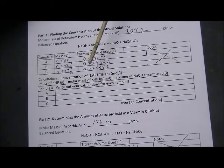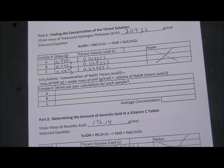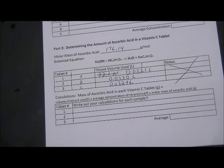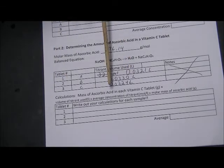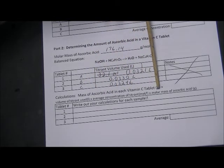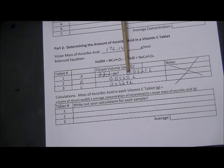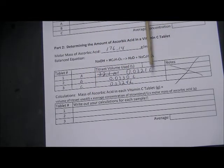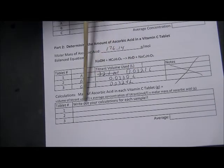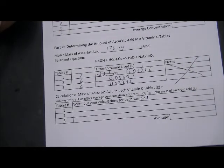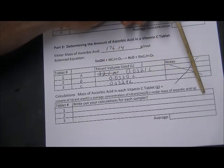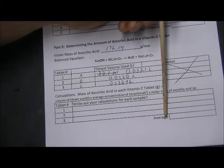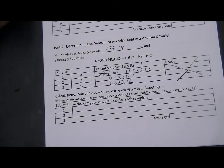Add the three concentration values together and divide by three, and put your average NaOH concentration there — you'll need it in the next set of calculations. The mass of ascorbic acid in each tablet equals the volume of titrant used times the average concentration you just calculated times the molar mass of ascorbic acid. Work that out for each of the three data sets, then find an average of those three masses. That average is the mass of ascorbic acid in each of these vitamin C tablets.